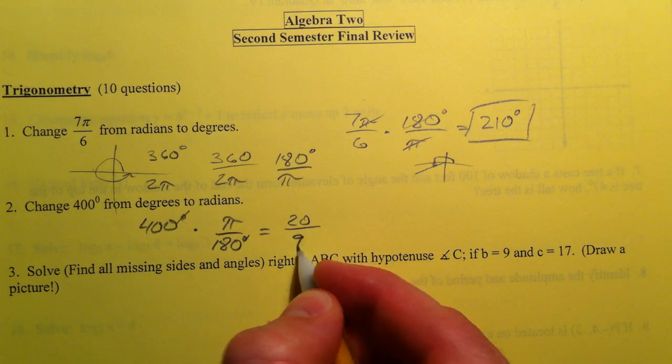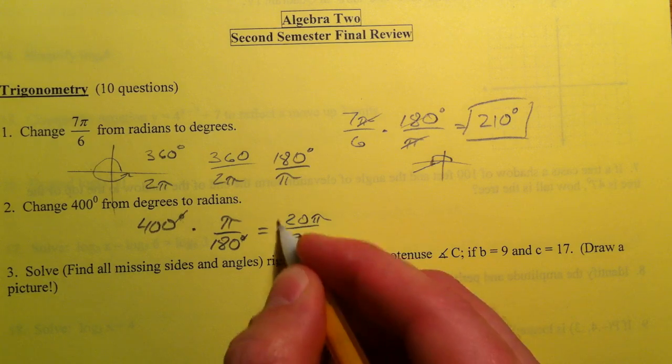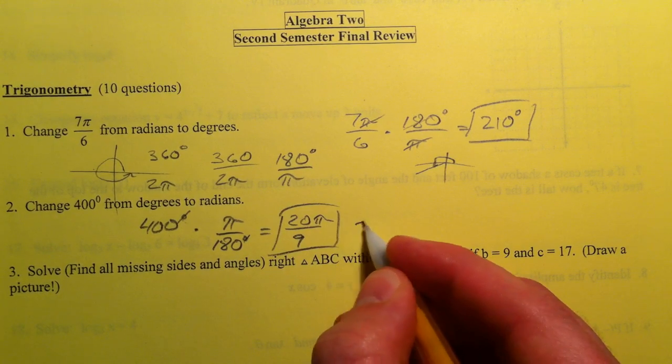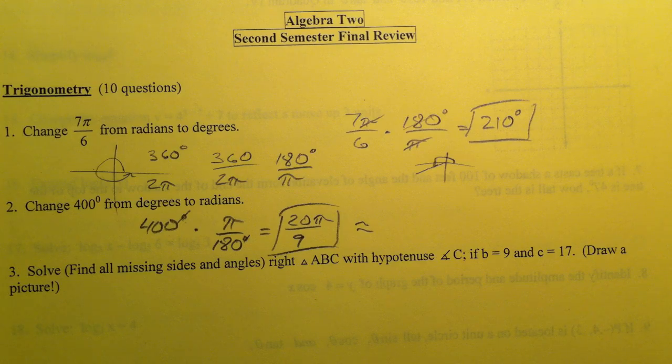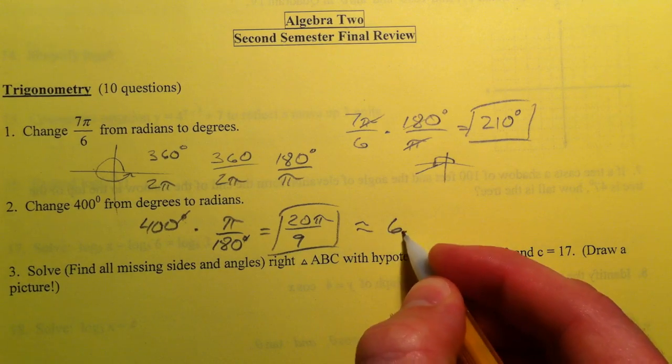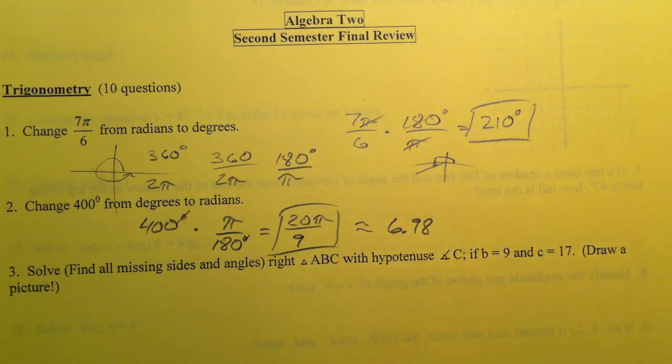And that's sad that I typed that in. So 20π over 9, or if you wanted to approximate it, we could actually approximate it as about 6.98 radians.